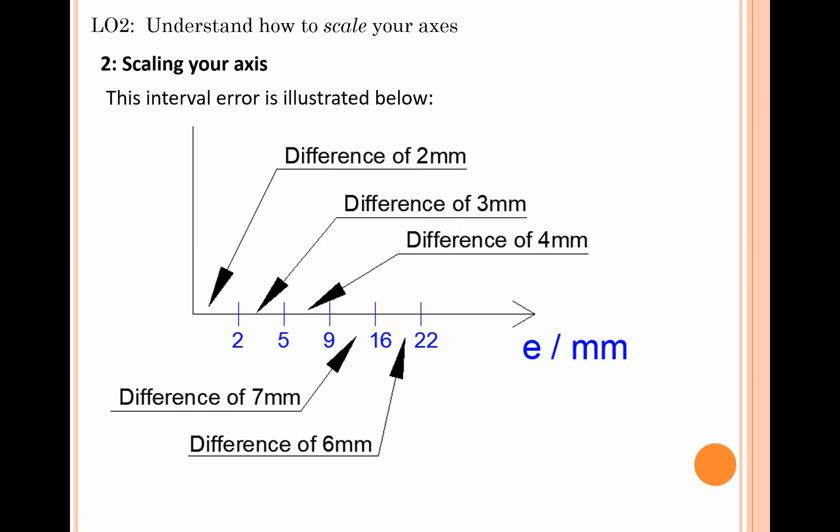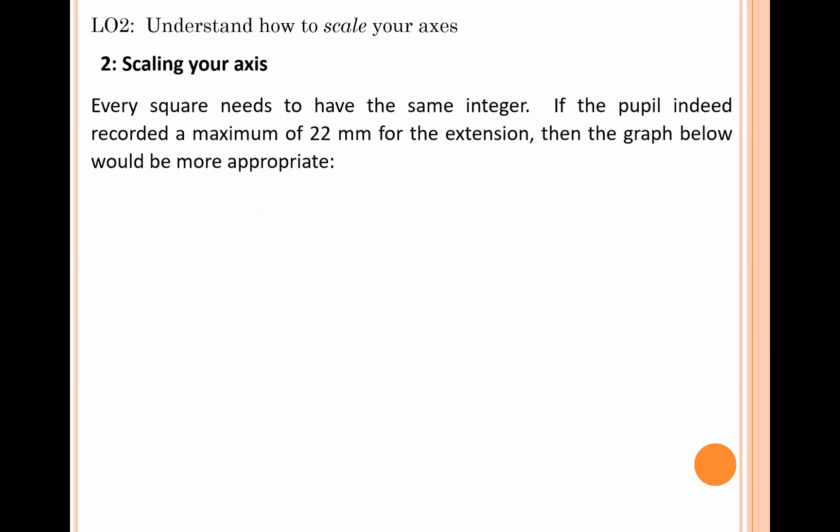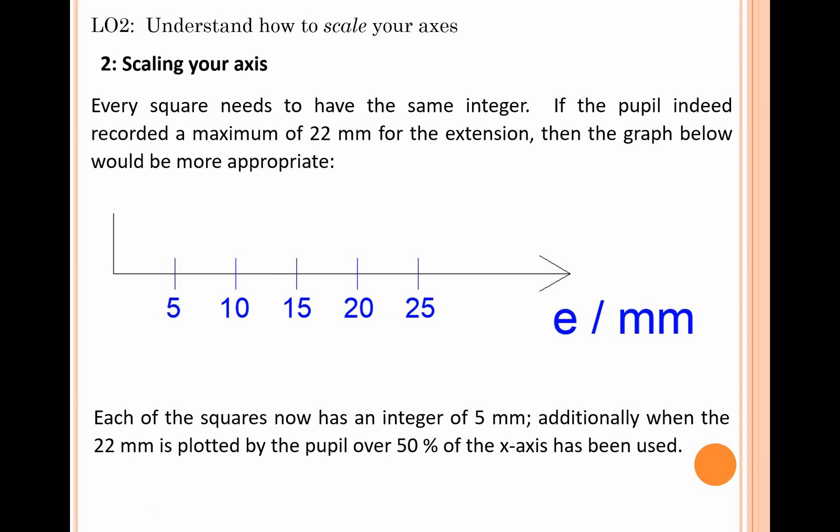Just come back to that previous example. Let's say the raw data gathered by the student was fine and the maximum extension was indeed 22 millimeters. The student probably should have designed that graph to look something like this. Intervals of 5 would have worked out perfectly fine: 5, then 10, then 15, 20, and 25. But critically, the interval now between each number is consistent and it's equal to 5 units—5 millimeters exactly. This is important because we've got this constant integer between each respective square, and additionally because the max extension is 22 millimeters, we have also used at least 50% of the x-axis.